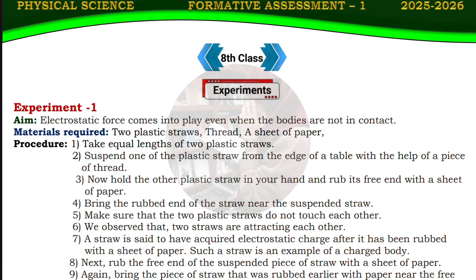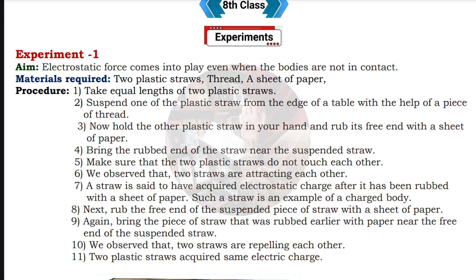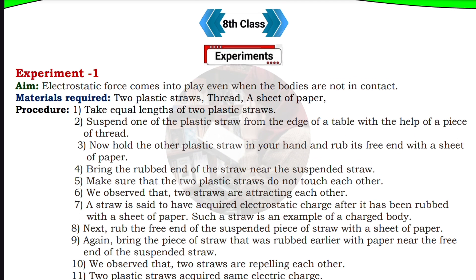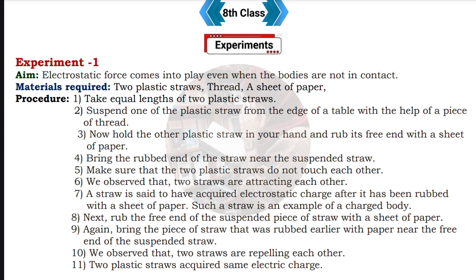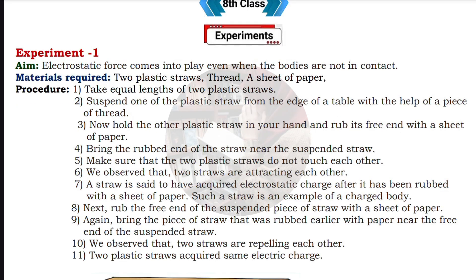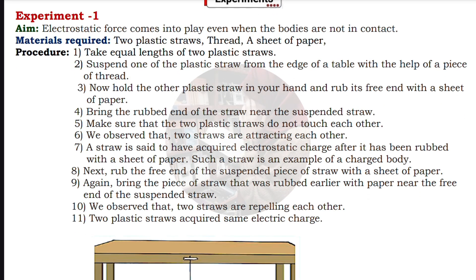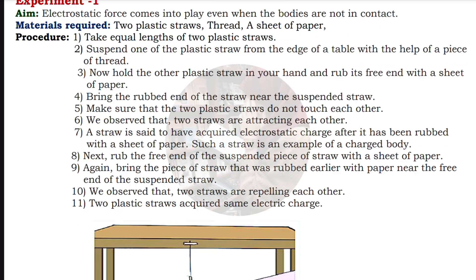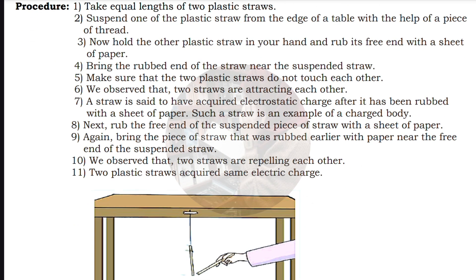Without skipping, watch till the end. For this eighth class Physical Science FA1 project, you are going to have five experiments and four project works. You have to write down the entire experiments and project works if your teacher asks, or only the selected ones if your teacher chooses some of them.